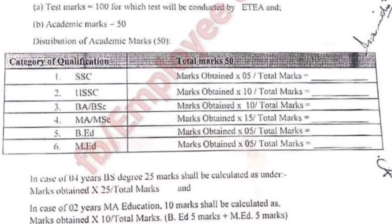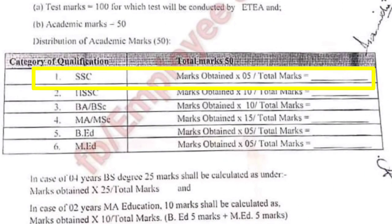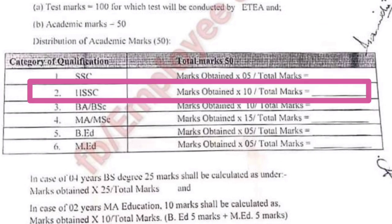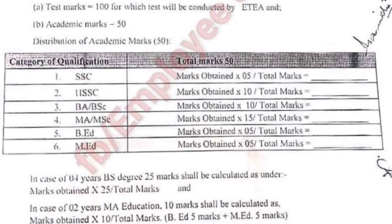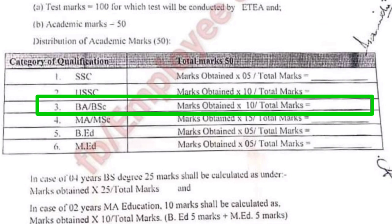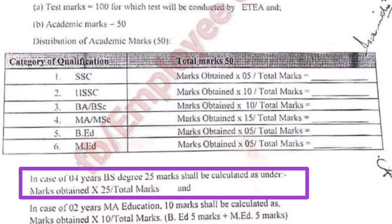Marks distribution میں total marks 150 ہیں جن میں 100 marks test کے اور 50 marks academic کے ہیں۔ Metric کے marks کا حساب: marks obtained کو 5 سے multiply کرو اور total پر divide کر دو۔ F.A/F.Sc کے لیے 10 marks ہیں - marks obtained کو 10 سے multiply کرو اور total پر divide کر دو۔ B.A/B.Sc کے لیے marks obtained کو 10 سے multiply کرو اور total پر divide کر دو۔ B.S four year program کے لیے total marks کو 25 سے multiply کیا جائے گا اور total پر divide کیا جائے گا۔